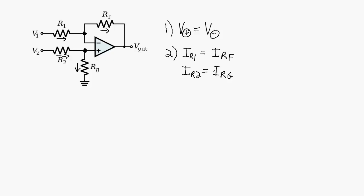Now in order to see how the output relates to the two inputs, one way to go about this is to make use of the superposition principle. We're going to see what the output is in relationship to one of the inputs, assuming the other input is grounded, and then do the same thing for the other input. We'll see how the output relates to V1 when V2 is zero, and then when we sum those two voltages together, we'll get an overall picture of what's going on in the circuit.